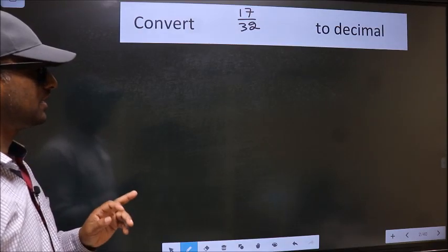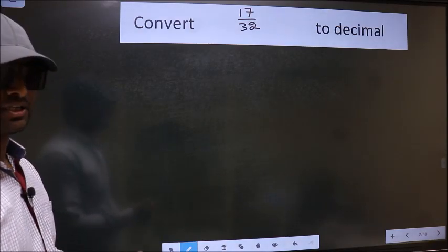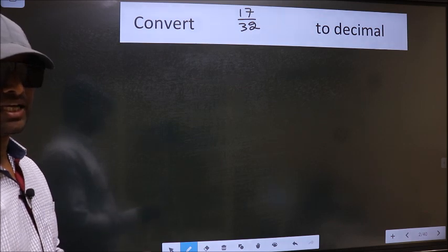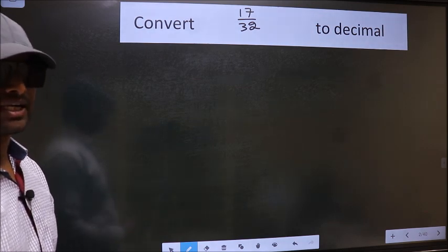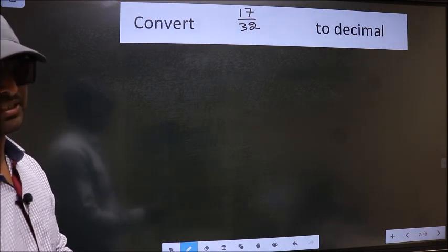Convert 17 by 32 to decimal. To convert to decimal, we have to divide. And to divide, we should frame it in this way.